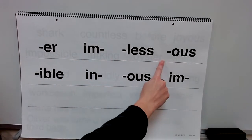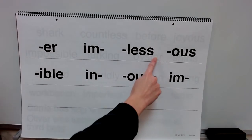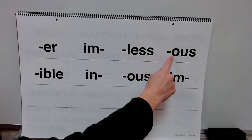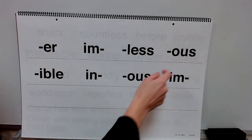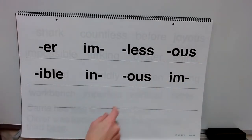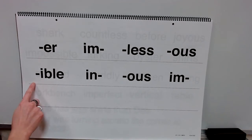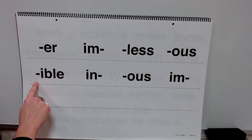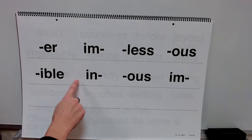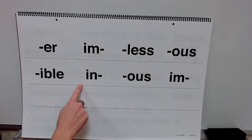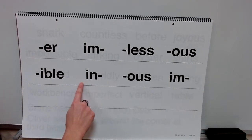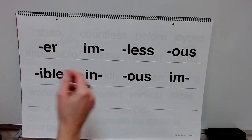Suffix: less. Meaning: without. Suffix: ous. Meaning: full of. Suffix: able. Meaning: capable or worthy of an action. Prefix: in. Meaning: not.